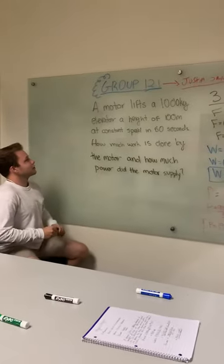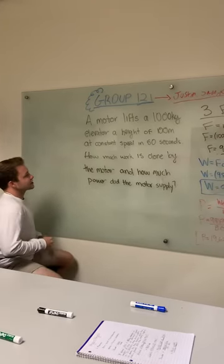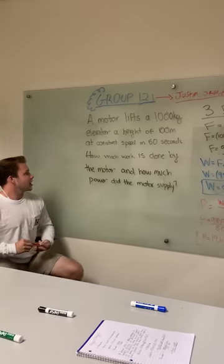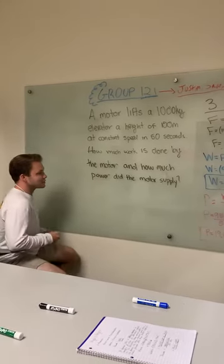Our problem is a motor lifts a 1,000 kilogram elevator at a height of 100 meters at a constant speed in 50 seconds. How much work is done by the motor and how much power did the motor supply?